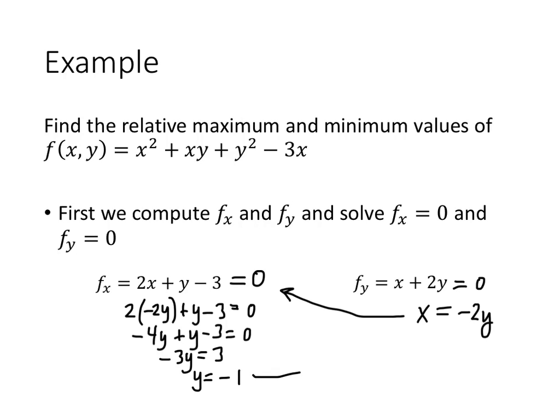Going back to the equation x equals negative 2y, we have negative 2 times negative 1, which is positive 2. So we get one potential maximum or minimum point at x equals 2 and y equals negative 1, the point (2, -1).